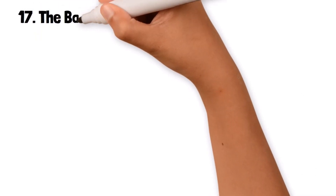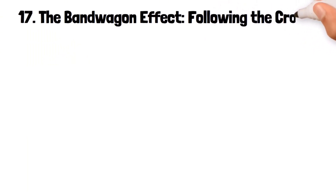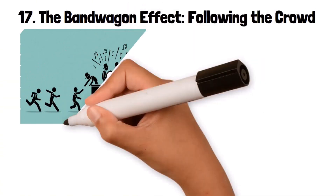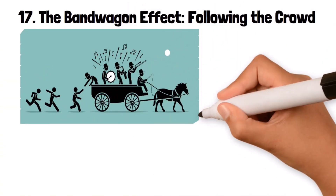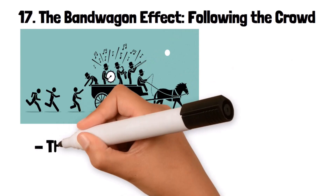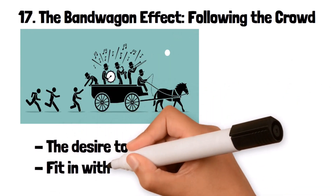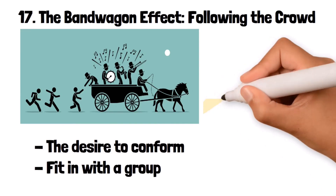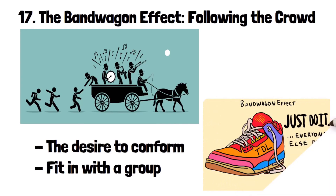17. The Bandwagon Effect: following the crowd. The bandwagon effect is a cognitive bias where people do something primarily because others are doing it, regardless of their own beliefs. This bias is often driven by the desire to conform or fit in with a group. For example, someone might buy a particular brand of shoes because everyone else is buying them, even if they don't particularly like the style.